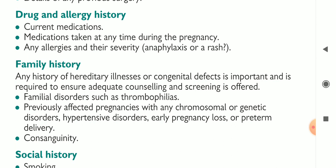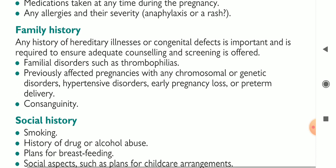Familial disorders such as thrombophilias, previous pregnancies affected by chromosomal or genetic disorders, hypertensive disorders, early pregnancy loss, preterm delivery, and consanguinity are all important. For example, a lady suffering from hypertension may have abnormal fetal development or preterm delivery, and thrombophilia may worsen the mother's condition after delivery.